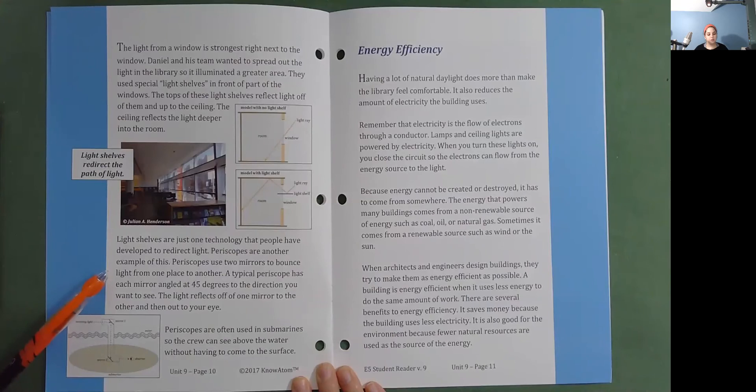A typical periscope has each mirror angled at 45 degrees to the direction you want to see. The light reflects off of one mirror to the other and then out to your eye. Periscopes are often used in submarines so the crew can see above the water without having to come to the surface. Light shelves redirect the path of light.